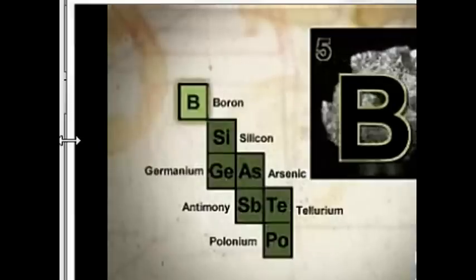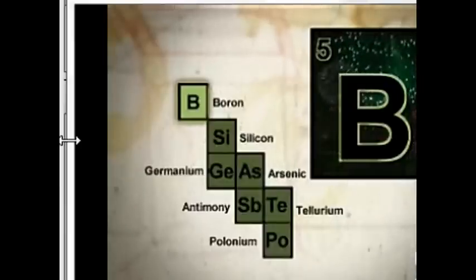Boron is a yellow-brown crystal. This nonmetallic element is used to make high-strength and lightweight aerospace equipment. When it burns, boron gives off a distinctive green glow, so it is a main element in green fireworks and flares.